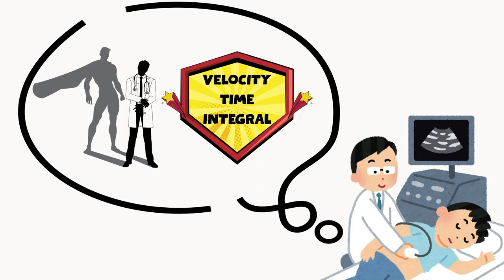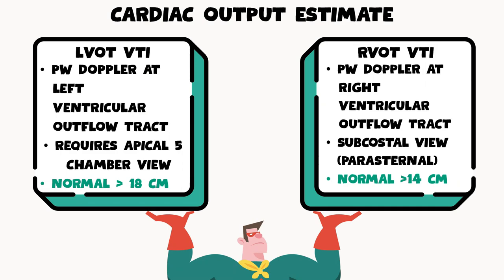I'm going to briefly cover the topic of velocity time integral and introduce this in case you aren't familiar. VTI is a way to estimate cardiac output. A lot of us are familiar with the left ventricular outflow tract velocity time integral, where you place pulse wave Dopplers at the left ventricular outflow tract. However, it does really require that great apical five-chamber view, which can be really challenging in some of these critically ill patients.